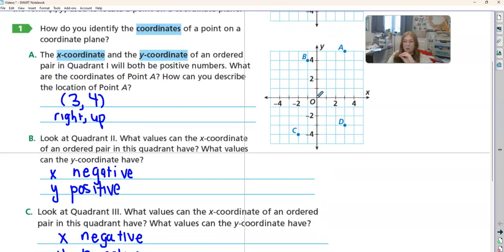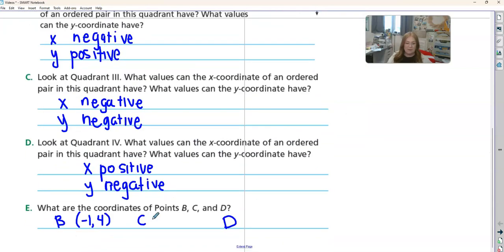So to get to c, we start at our origin, 0, 0. So we went negative 2, and then down negative 4. So we can see negative 2, negative 4 on c. Negative 2, negative 4.